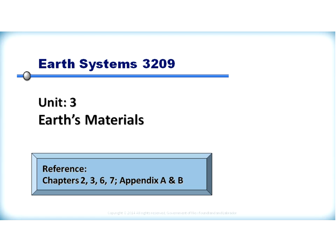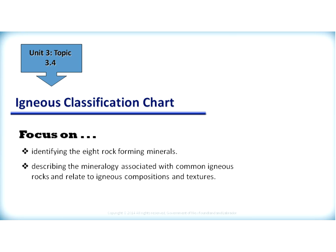EARTH Systems 3209, EARTH Materials, Unit 3. Reference for this presentation can be found in the textbook in Chapters 2, 3, 6, 7, and Appendix A and B in the curriculum guide. Unit 3, Topic 3.4.